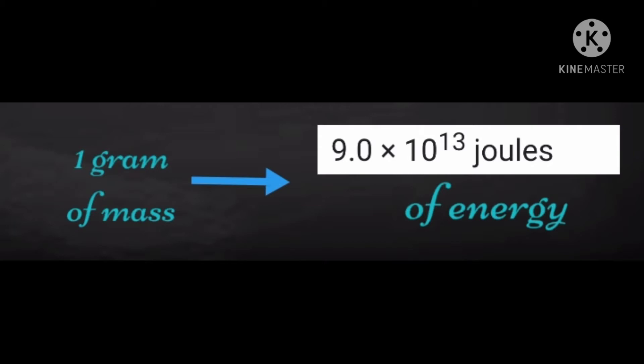For example, if one gram of mass is converted into energy, 9 times 10 to the power of 13 joules of energy will be released, which is equal to the energy generated by a 1,000 MW power station run continuously for 25 hours.